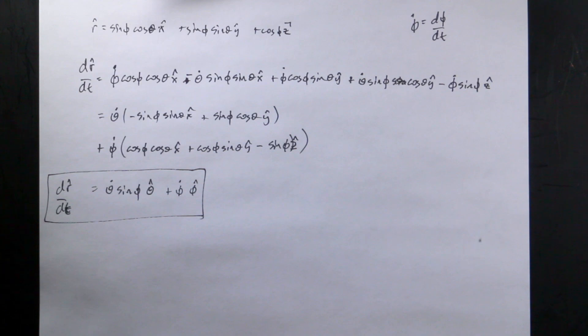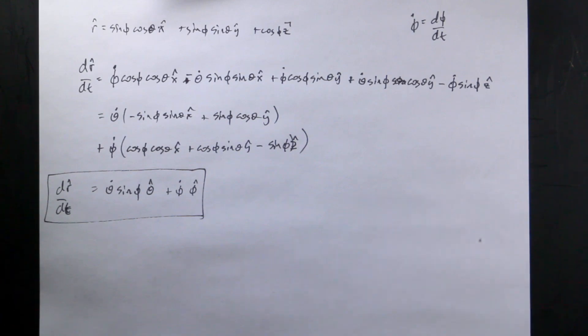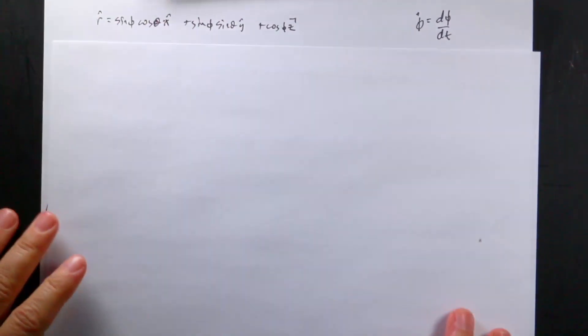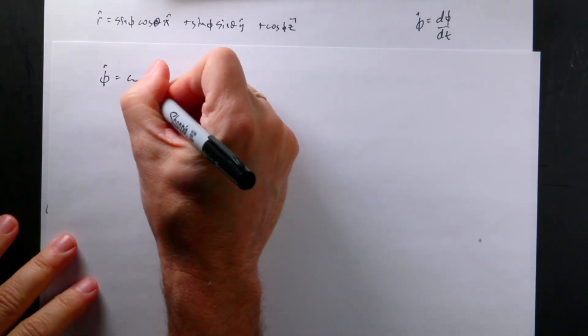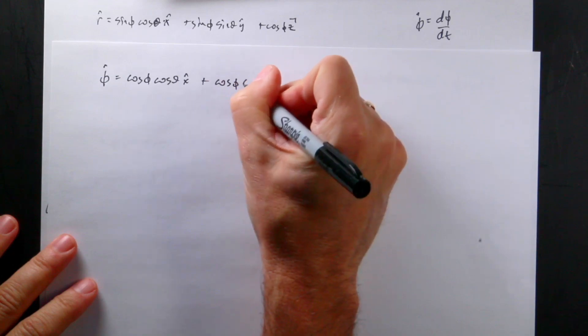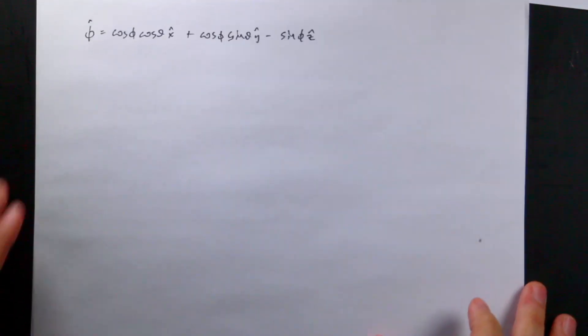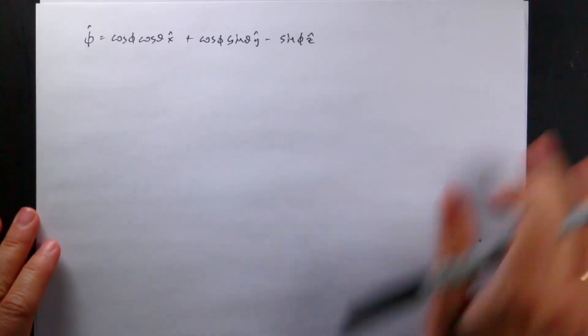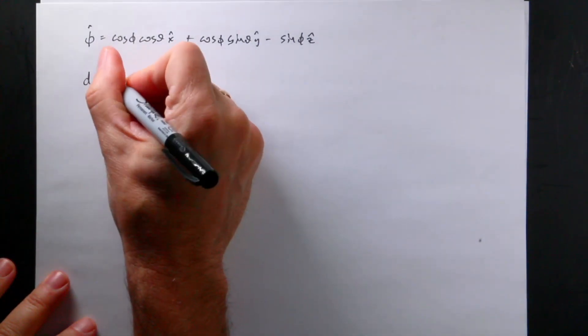Now let's move on to phi_hat. I need to start with the definition of phi_hat and write it out: phi_hat equals cosine(phi) cosine(theta) x_hat plus cosine(phi) sine(theta) y_hat minus sine(phi) z_hat. Now I can take the derivative of this with respect to time.